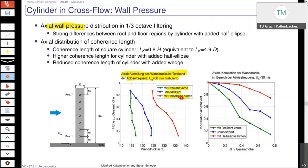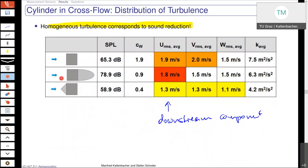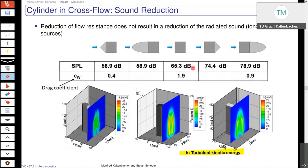This clearly shows us that the highest wall pressure amplitudes we have for this case, and that also results in the highest sound pressure level — this is the sound pressure level measured by the microphone at some distance where there is no flow.